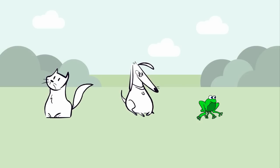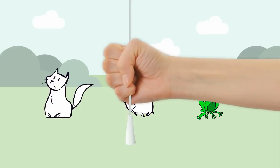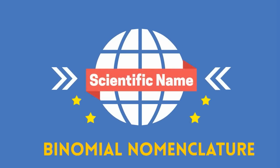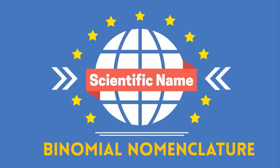In order to avoid confusion, animals and plants are identified with a scientific name. This system is called binomial nomenclature. These names are important because they allow people throughout the world to communicate about animals.